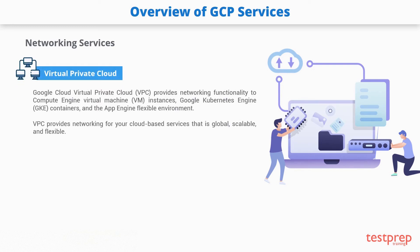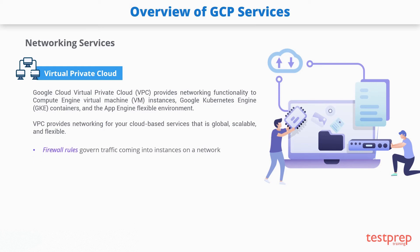The common services under Google's networking include Virtual Private Cloud (VPC). Google Cloud VPC provides networking functionality to Compute Engine virtual machine instances, Google Kubernetes Engine containers, and the App Engine flexible environment. VPC provides networking for your cloud-based services that is global, scalable, and flexible. You can set firewall rules to govern traffic coming into instances on a network, and use routes to implement advanced networking functions such as creating virtual private networks.